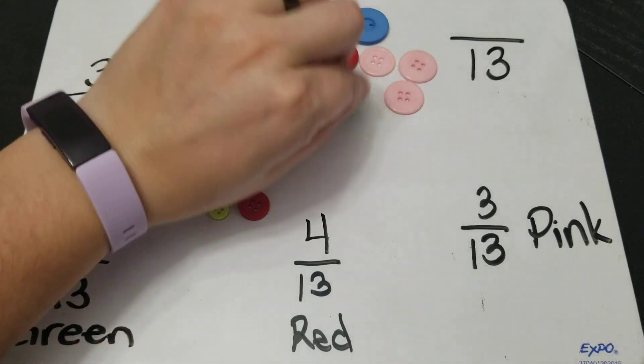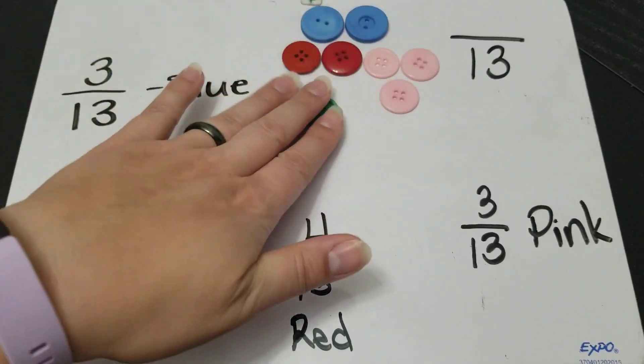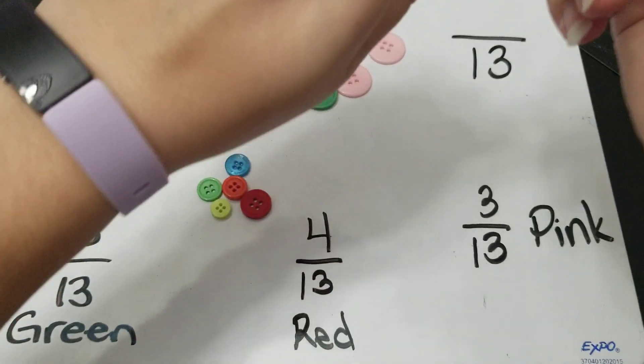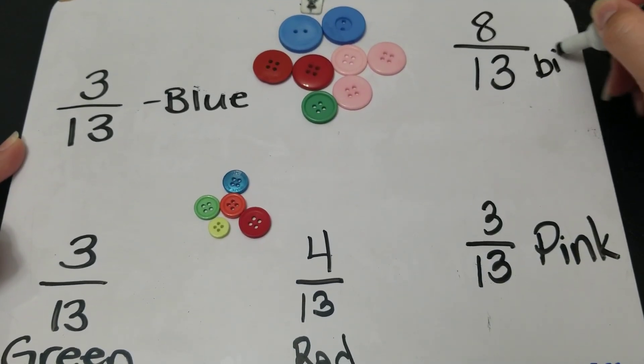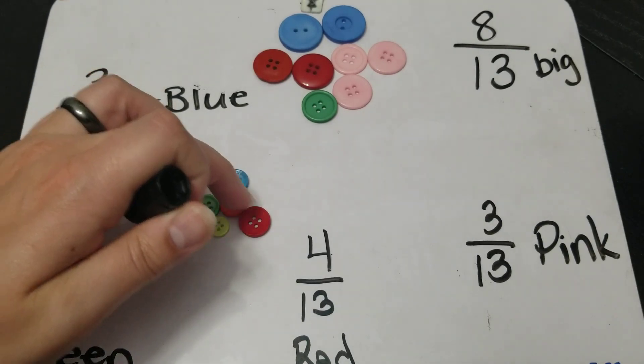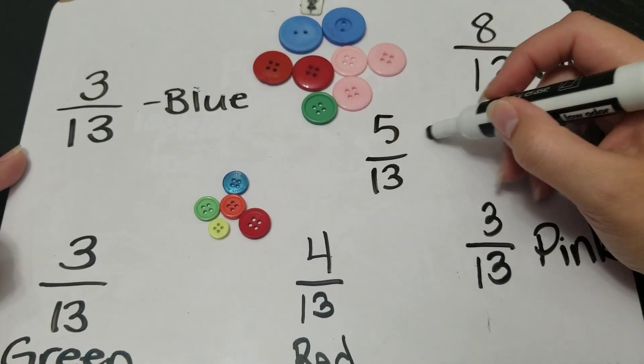So I could have said my fractions would be one, two, three, four, five, six, seven, eight. I'll put that on there. Eight out of 13 are big. And one, two, three, four, five. Five out of 13 are small.